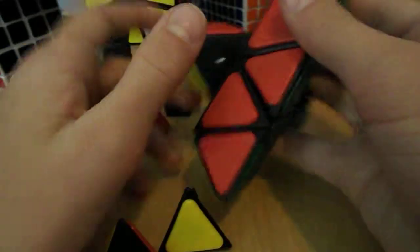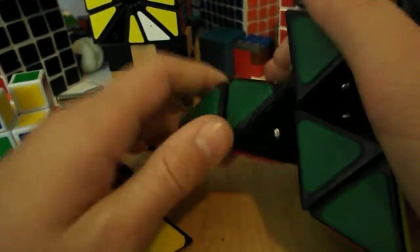Just do that on the other six corners. If it doesn't seem like it wants to come off, you might have to take off one of the screws to take it off.